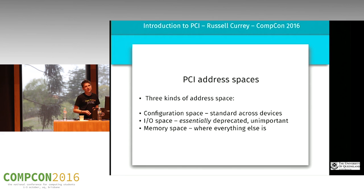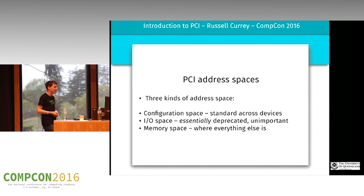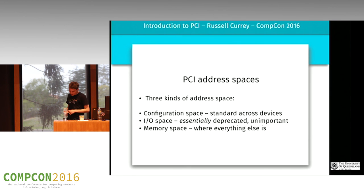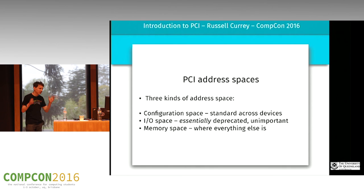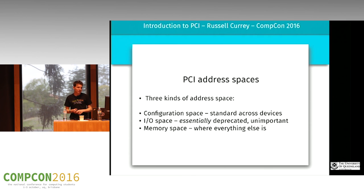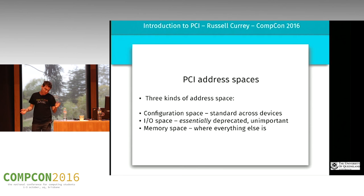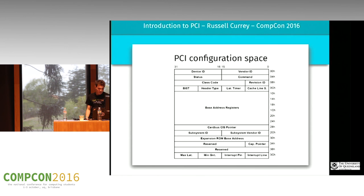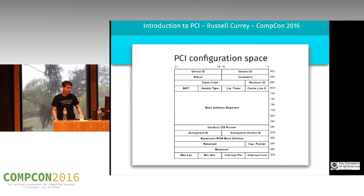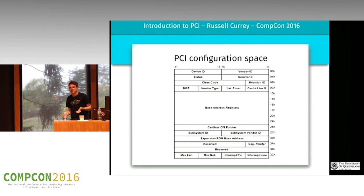When we access PCI devices there are multiple address spaces. The two that really matter are configuration space and memory space. Config space is standardized — PCI devices have to put stuff there, and certain things must be at certain memory locations. Things like the vendor ID are in configuration space. Memory space is basically where all the data is.